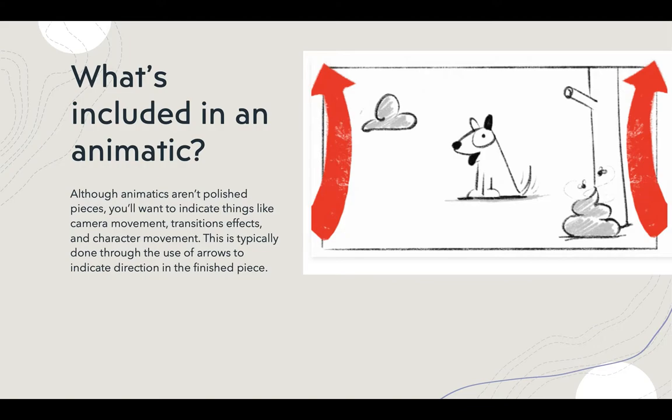Although animatics aren't polished, you might have some arrows, a little bit of motion, a little bit of character movement. This is why I was talking about making your source images in layers. For this assignment, I'm really going to be focusing on getting some sound in, getting your timing taken care of, and really having you know where you're going.